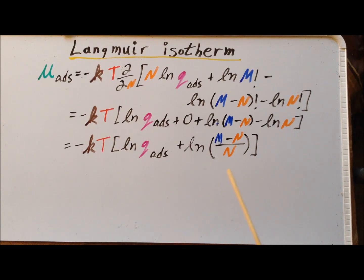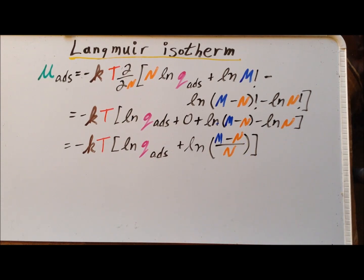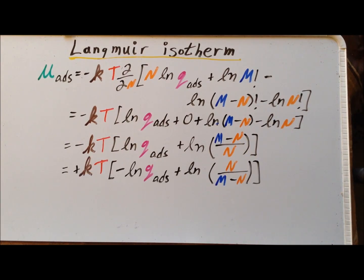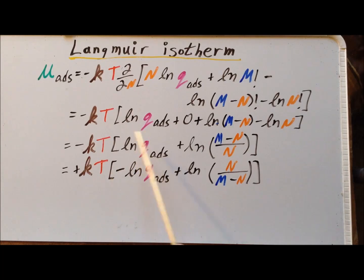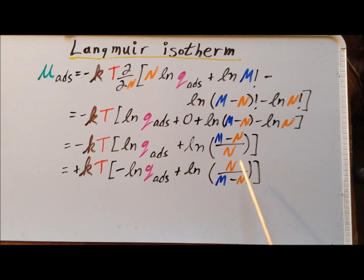Applying a property of logarithms, we simplify the natural log of (m minus n) minus the natural log of n as the natural log of the quantity (m minus n) divided by n. Next, we distribute the minus kT throughout the bracketed expression. This converts the natural log of q adsorbed into minus natural log of q adsorbed. For the second term, using the property that multiplying a logarithm by minus 1 flips the fraction inside.